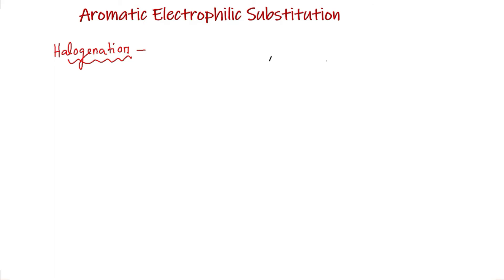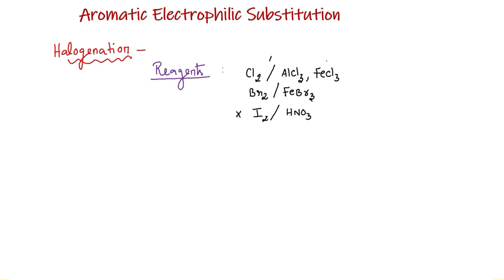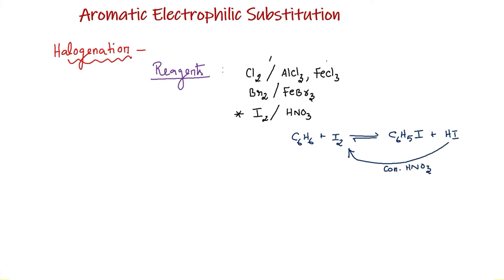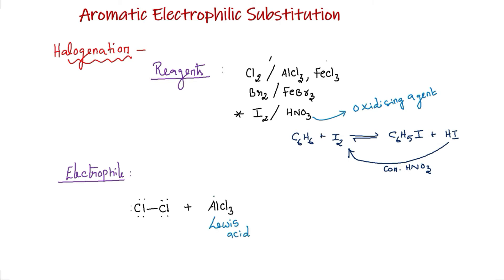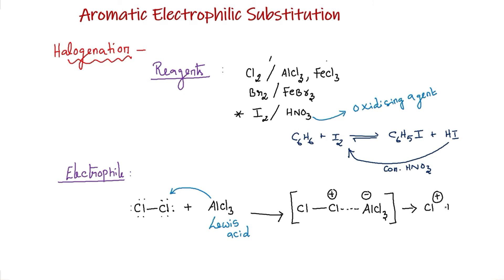Let us see some key points about these reactions. For halogenation, the reagents generally used are halogen in the presence of a Lewis acid. But for iodination, we particularly use nitric acid because iodination of benzene is a reversible reaction. In order to shift the reaction in the forward direction, the by-product HI should be converted back to iodine, which is done by concentrated nitric acid acting as an oxidizing agent. Regarding electrophile formation: when the Lewis acid, which is electron-deficient, reacts with the halogen, it polarizes the halogen and forms a complex which dissociates to form the electrophile — the chlorinium ion.